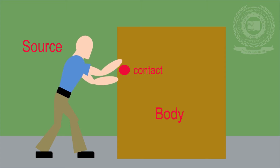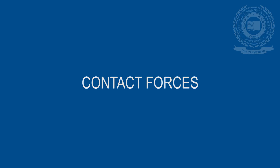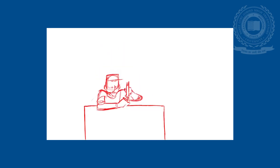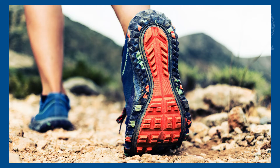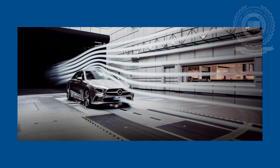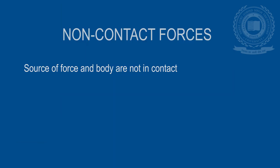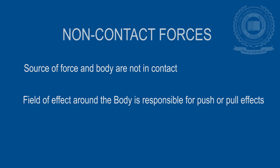In the case of contact forces, the source is in direct contact with the body while applying a push or a pull. Some examples of contact forces are hammering of a nail, pulling or pushing of a cartwheel, friction forces, air resistance, spring force, etc. In the second case, the source of applied force and the body under consideration are not in any type of contact.